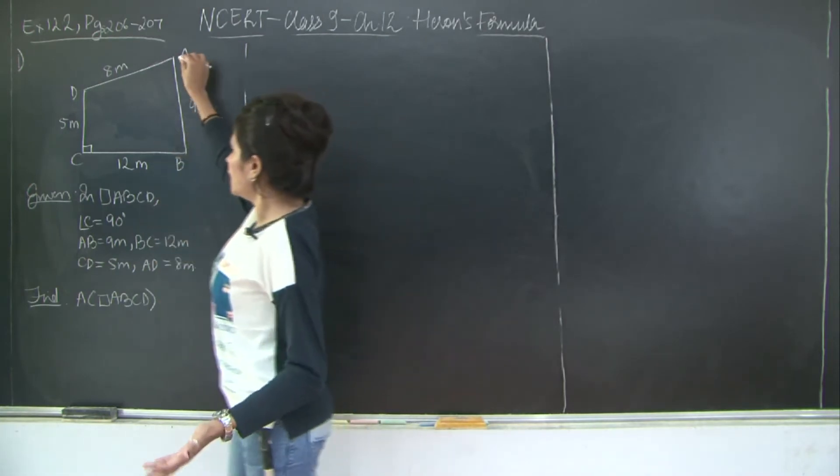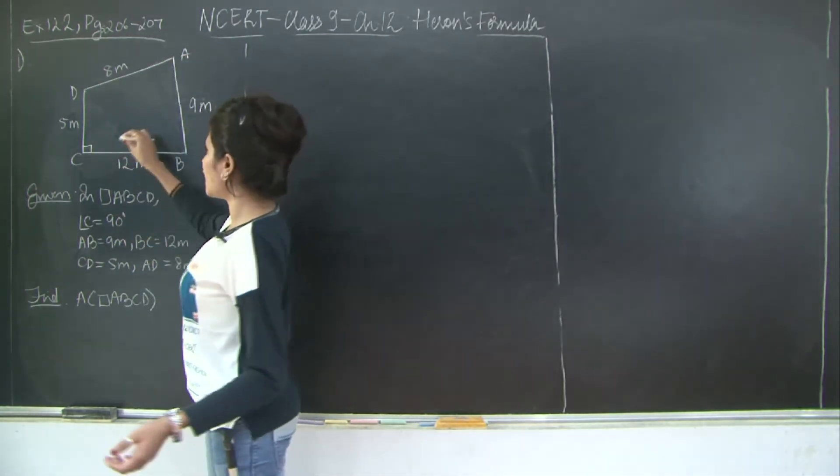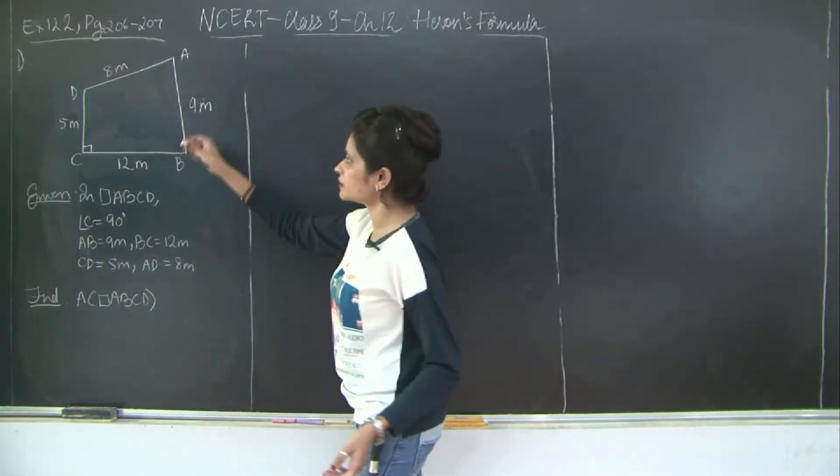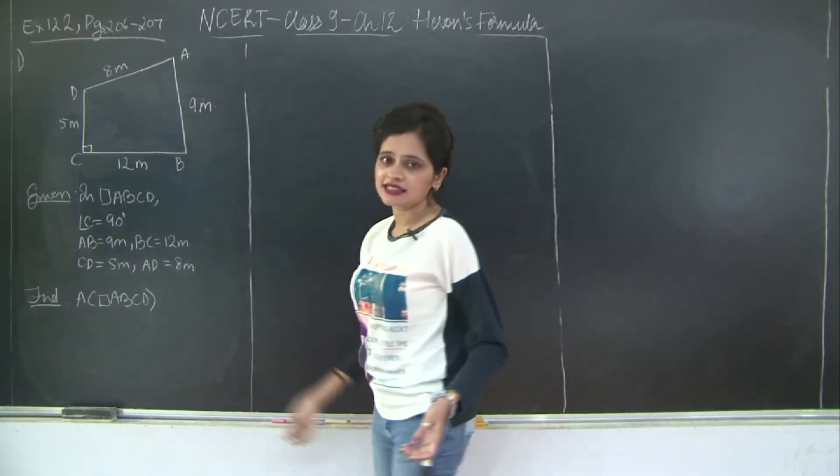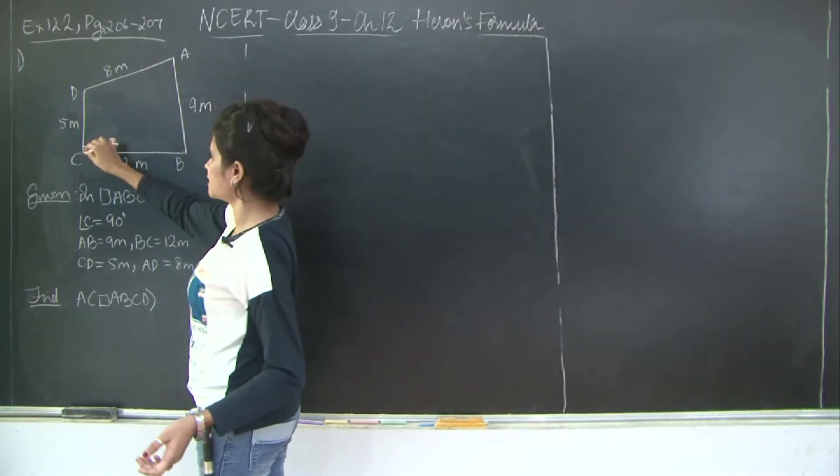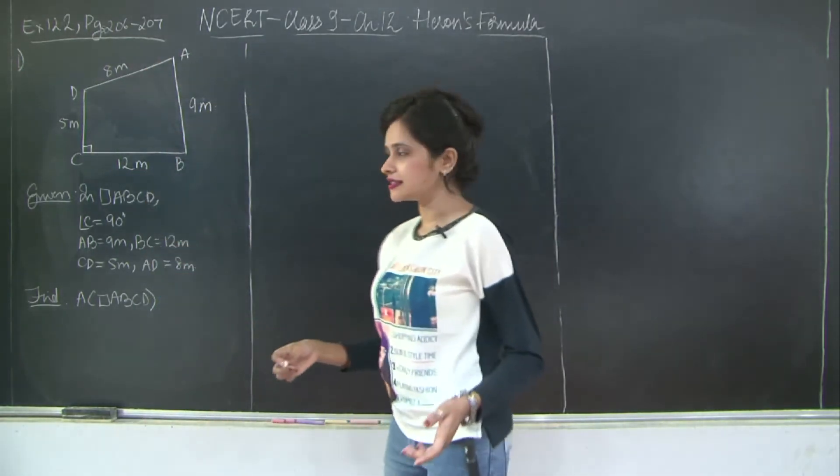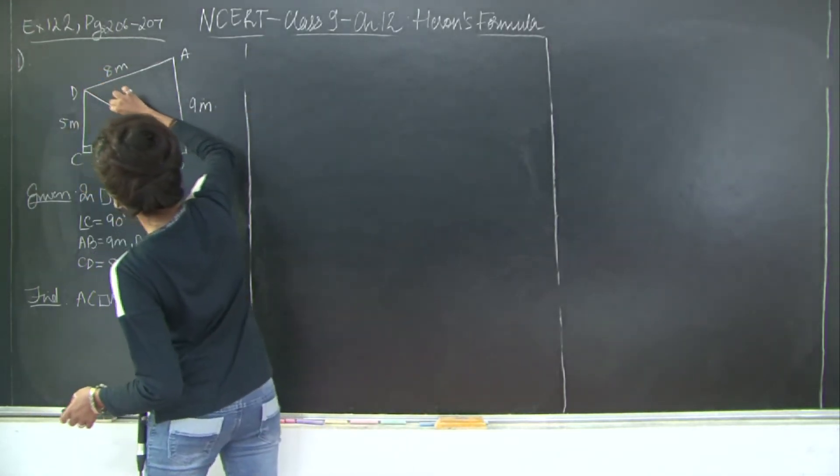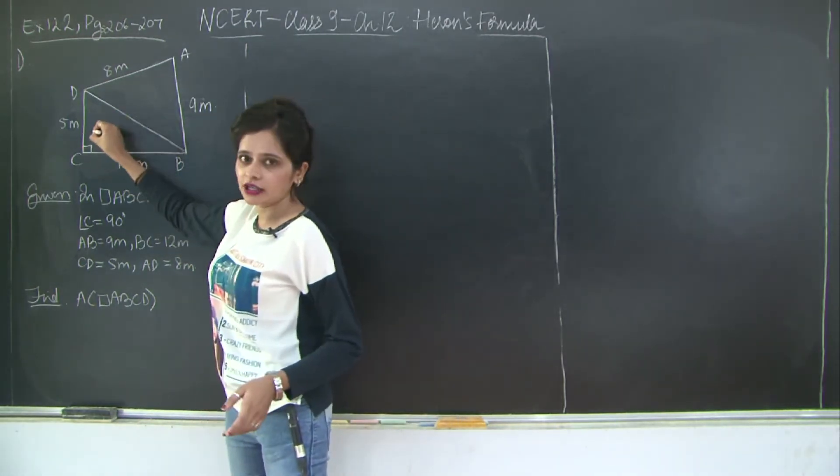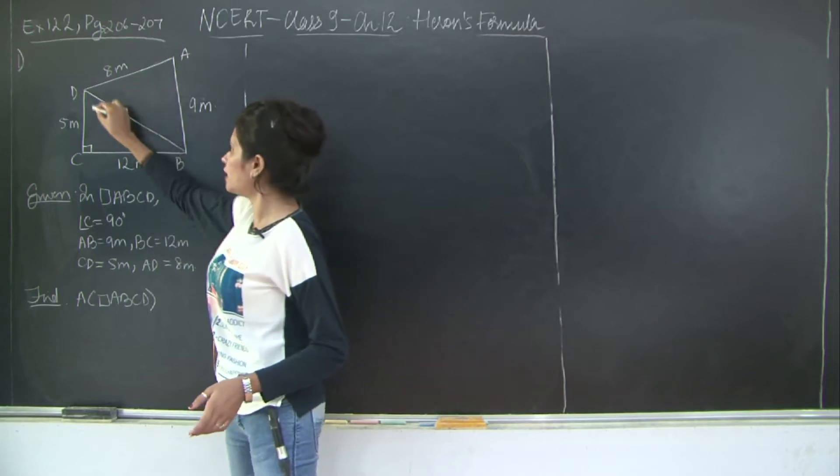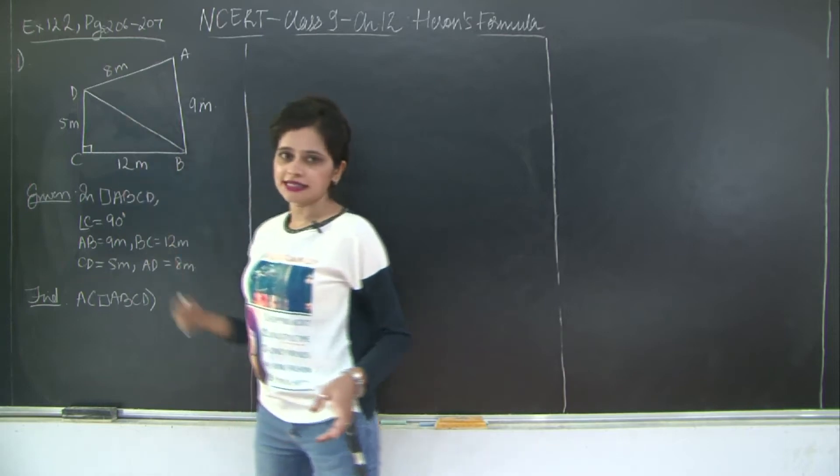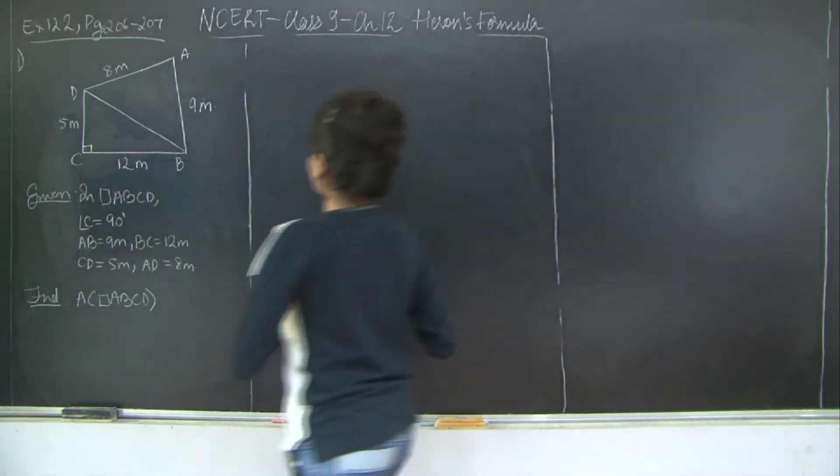And let's see if you join the diagonal AC. Here you will have to first find the length AC which would be very difficult because except for angle C, no other angle is given to be 90 degrees. So when you divide this quadrilateral using AC, then you won't have any way to find the length of AC. So what we would do is we will do this construction of joining BD.